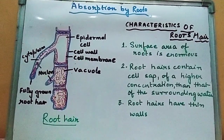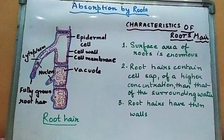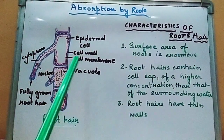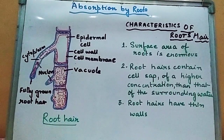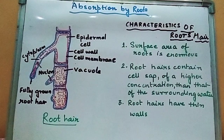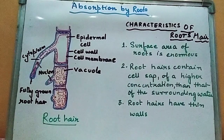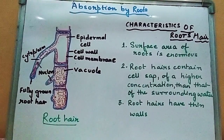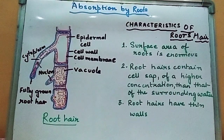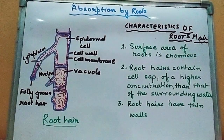In this way, absorption of water and minerals takes place via the root, and the main structure involved is the root hair. This was the introductory video on root hairs and their process of absorption and characteristic features. In the next video we will cover the processes involved in absorption by roots — diffusion, osmosis, imbibition, and active transport. Stay tuned, please do like, share, and subscribe to my channel. Thank you for watching.